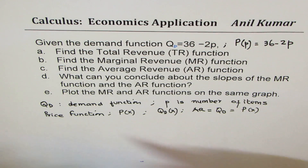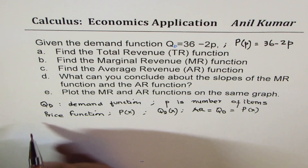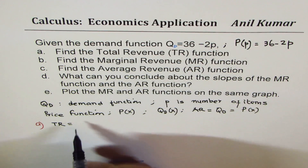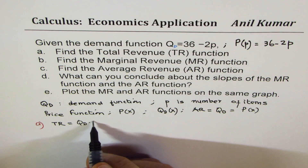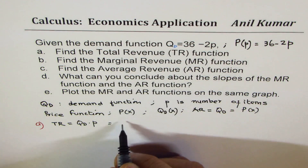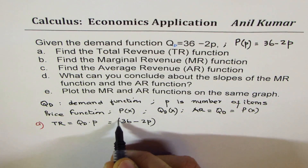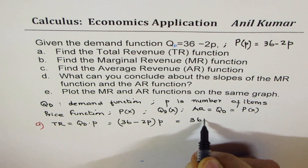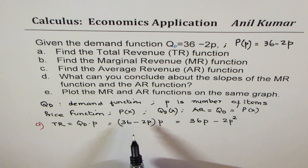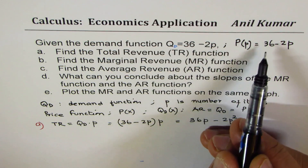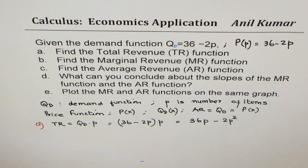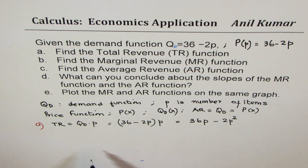Let's begin with part A: determine total revenue. Total revenue is defined as the demand function times p — demand times the number of items sold. From the given equation we write TR equals (36 minus 2p) times p, which gives us 36p minus 2p squared. So that is the total revenue function. If you're selling 10 items at a given price, number of items times price equals total revenue.